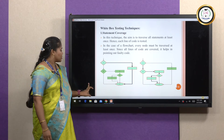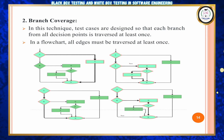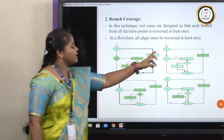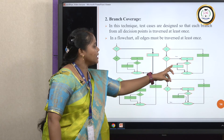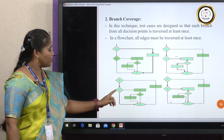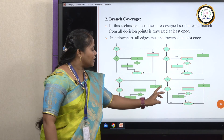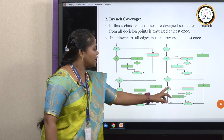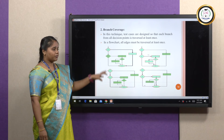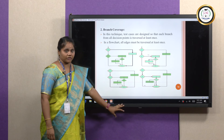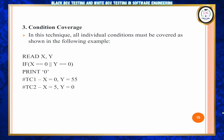Next, branch coverage. Under branch coverage, all nodes must be traversed at least once. For example, A can connect to C and G, or A connects to B, D, E, F, and G, or another path connects A, B, C, E, and G. Any path can connect, as long as all nodes are covered by at least one path — that is branch coverage.